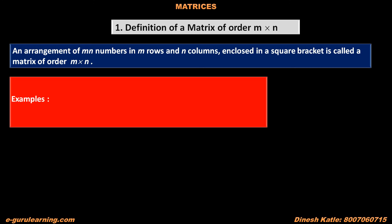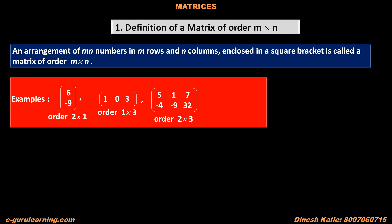Examples. The first matrix contains two elements, 6 and minus 9. This matrix has two rows and one column, so the order of this matrix is 2 into 1. The second matrix contains three elements: 1, 0, 3. This matrix has one row and three columns, so its order is 1 into 3. The third matrix contains six elements.